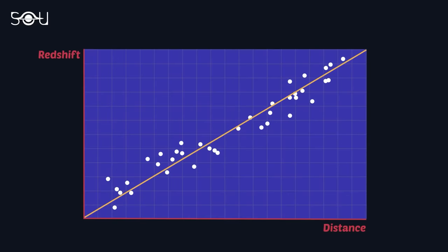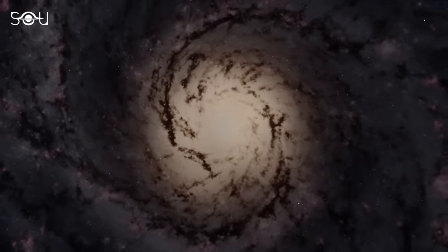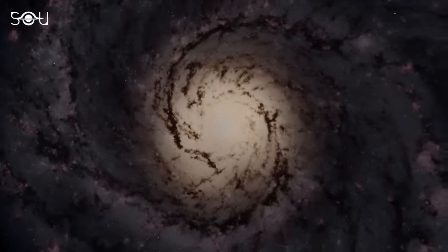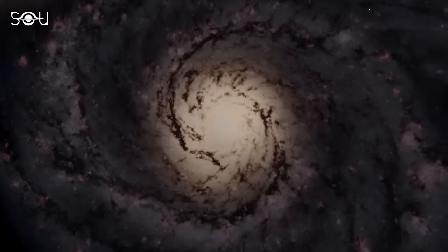the farther a galaxy is in deep space, the faster it moves away from us, and its redshift is more. The redshift phenomenon allows astronomers to determine how far the galaxy is from us.